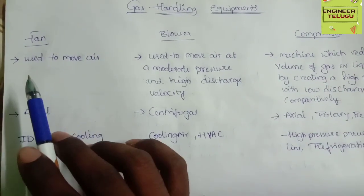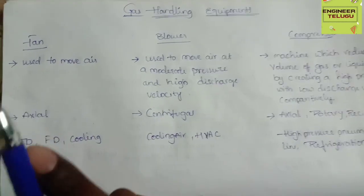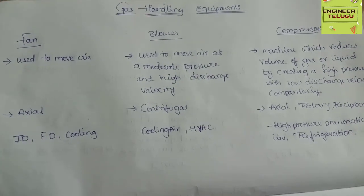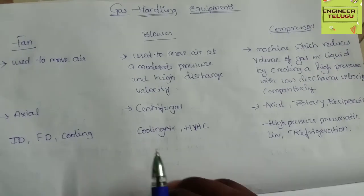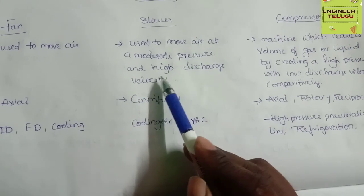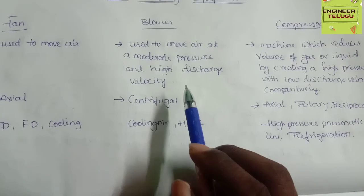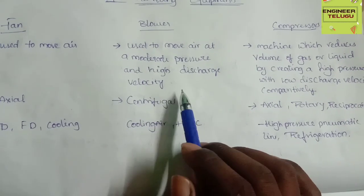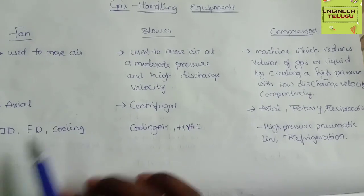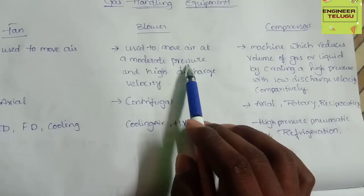First, the fan. The fan is used to move air at a moderate pressure and high discharge velocity comparatively. The fan can be used to maintain a fluid at low pressure — negligible pressure. It generates flow and can be used to maintain a fluid pressure.